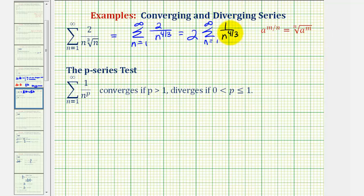Notice if this series here converges, then 2 times a converging series would also converge. And in this form, it's much easier to recognize that p is equal to four-thirds, and four-thirds is greater than 1, and therefore the series will converge.